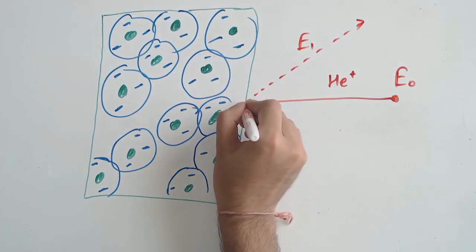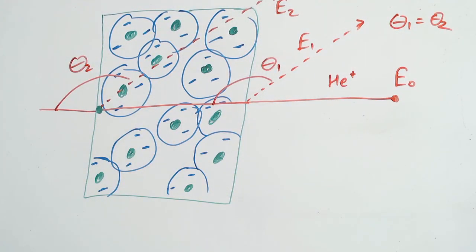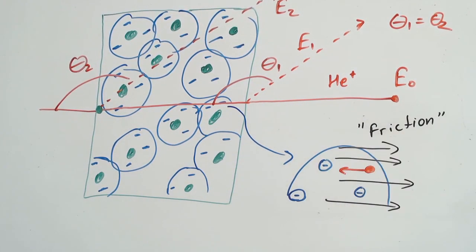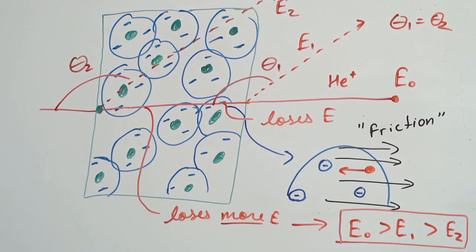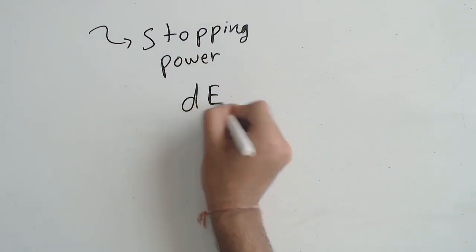As such, when the projectile finally recoils from a nucleus and then again comes back out of the sample and hits the detector, the energy it will register will be less than that recorded from a projectile recoiling from the surface. The term for this section that we described is the stopping power.